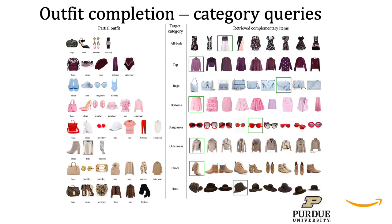Our framework is also designed so that users may specify their preference for the target item in the form of either a category or freeform text descriptions, and we can retrieve complementary items that both match the partial outfit and the user specification. We show some qualitative results generated by our framework for the partial outfit on the left and the target categories. This figure shows the top 10 retrieved complementary items, and the ground truth is indicated by the green bounding box.